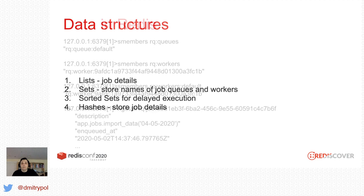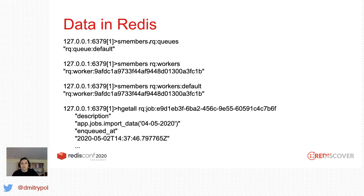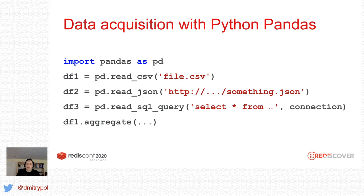In Redis, the data looks like this: I have a data structure called 'rq:queues', a sorted set with one queue called 'default'. In real-life systems I've usually had multiple queues — high, default, low priority, plus queues dedicated to emails and so on. Redis also stores the workers currently monitoring this instance and the mapping of queues to workers. All this logic is handled by the library. There's also an example of a Redis hash with the details of a completed job. In my application I use Python Pandas for data acquisition and manipulation — for example, read_csv to load a CSV file into a data frame, and then SQL-style select and group-by aggregations.